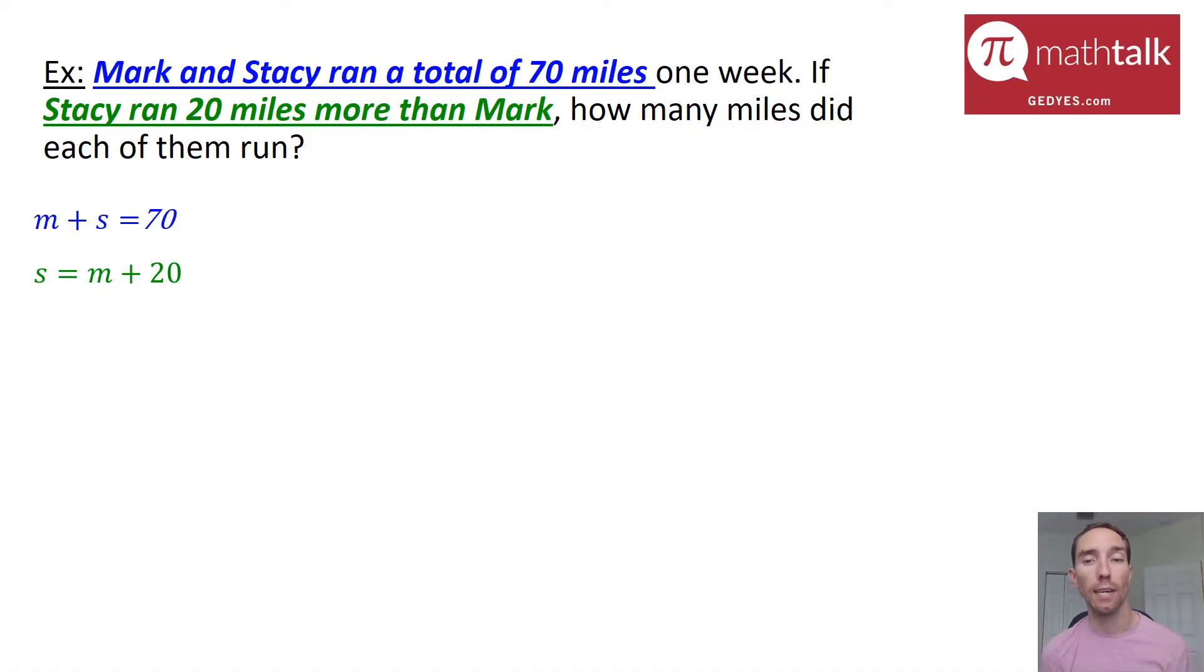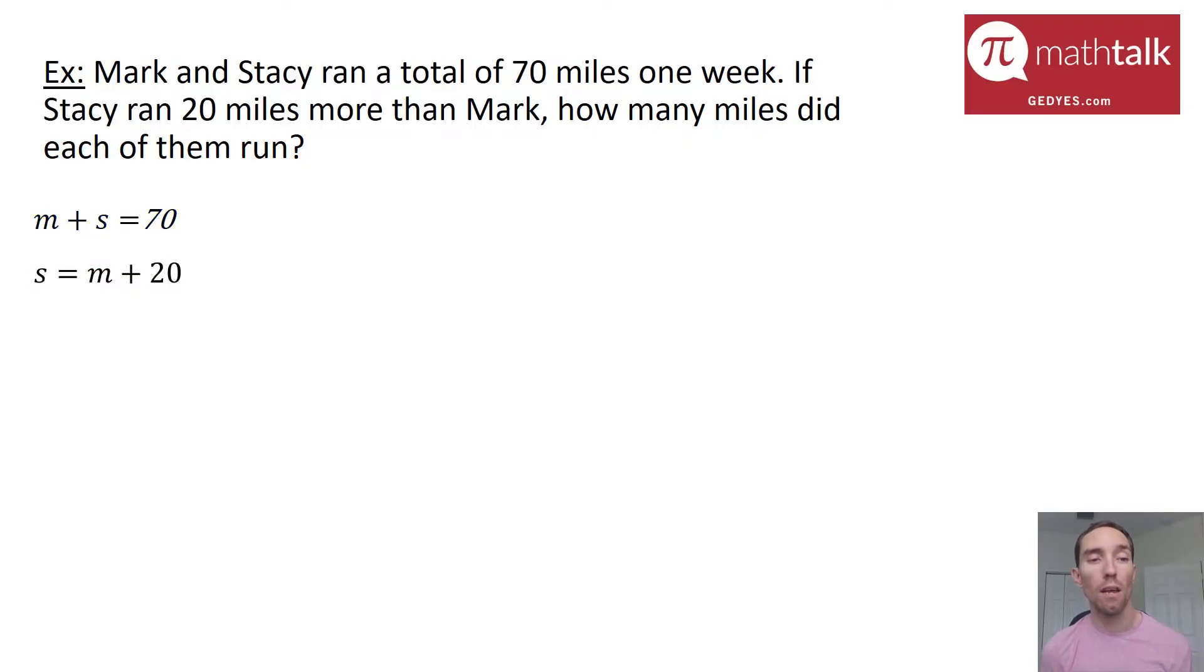Now that I have my two equations set up, I can go ahead and solve them using a system of equations. I'm going to use substitution because I have Stacy equals Mark plus 20. So I'm going to take the quantity M plus 20 and plug it in for S in my other equation. And this will help me solve for M. So when I do that, I get M plus the quantity M plus 20 equals 70.